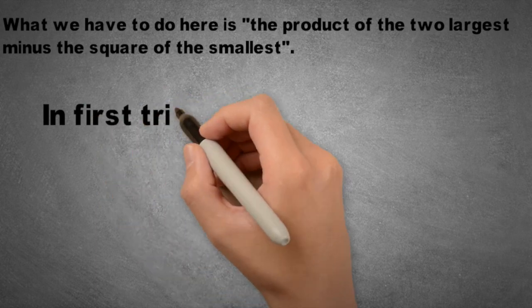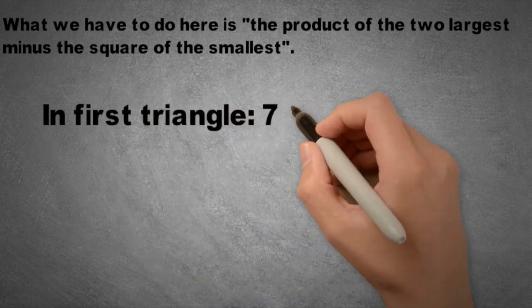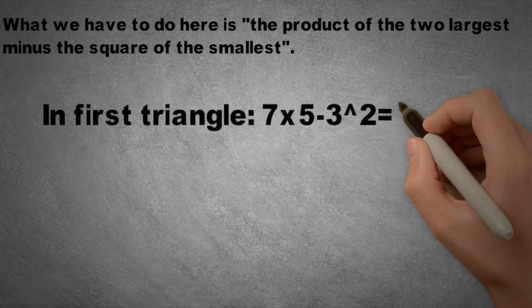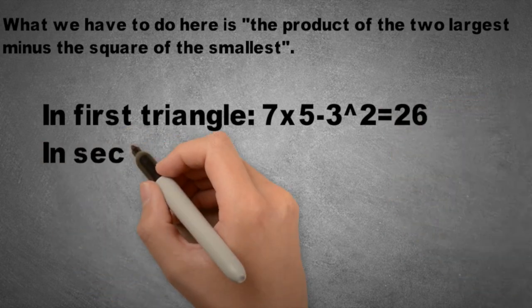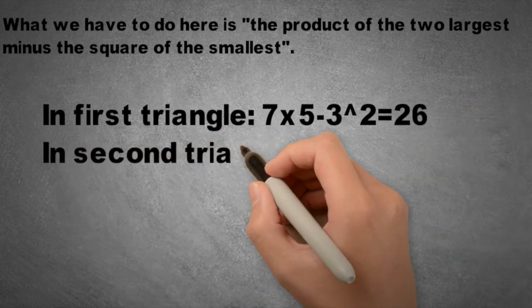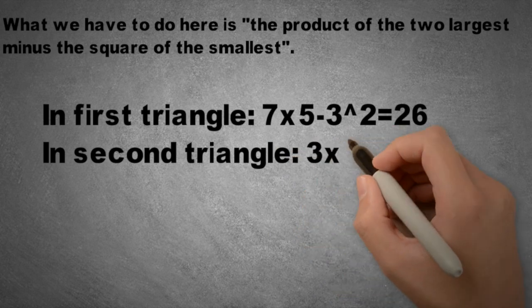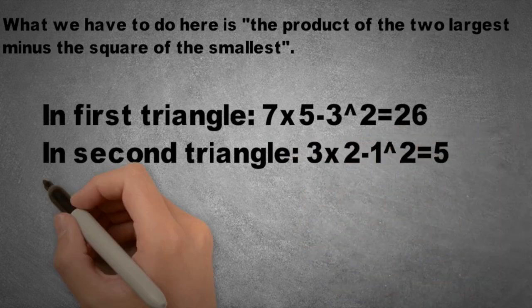In first triangle, 7 times 5 minus square of 3, that is equal to 26. In second triangle, 3 times 2 minus square of 1, that is equal to 5.